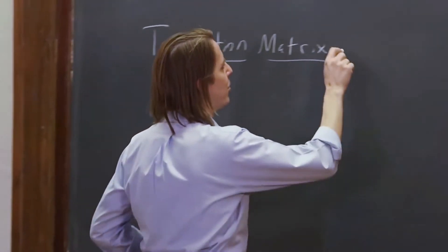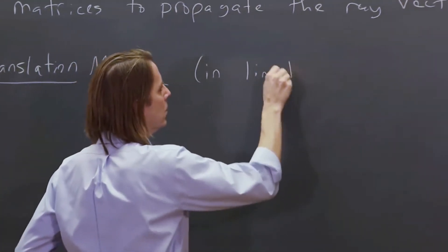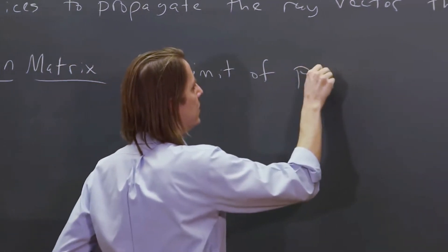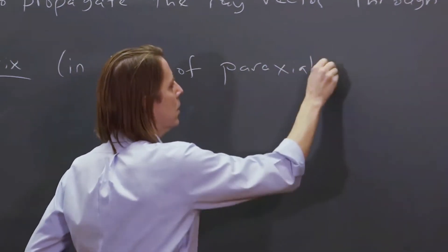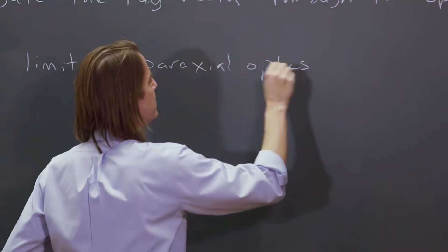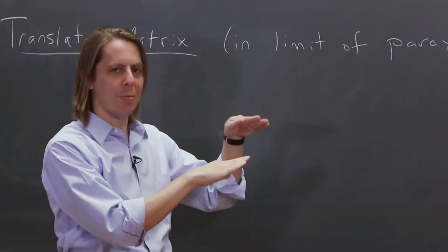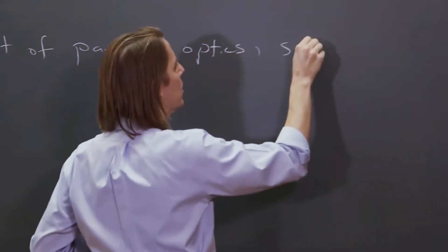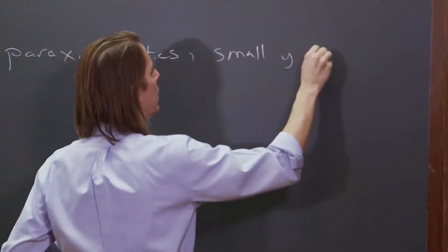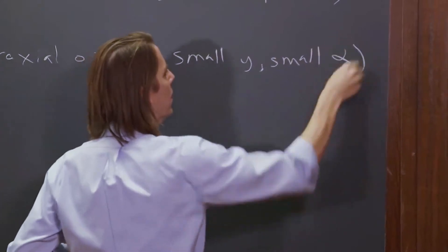And remember, in the limit of paraxial optics, we used to say that just means the ray is very close to the optical axis and keeps a small angle. So now we mathematically know what that means: small y, small alpha.